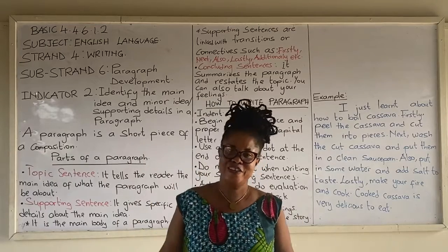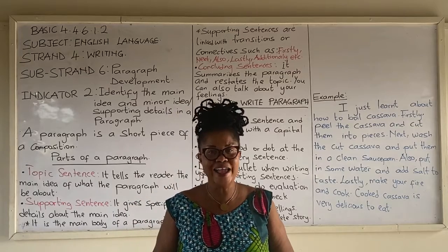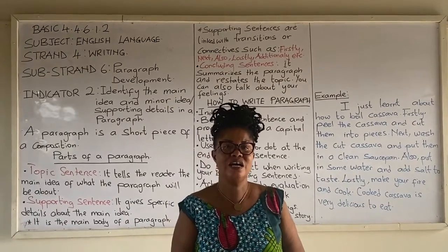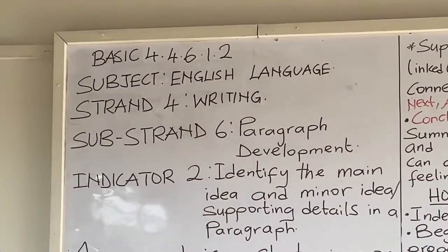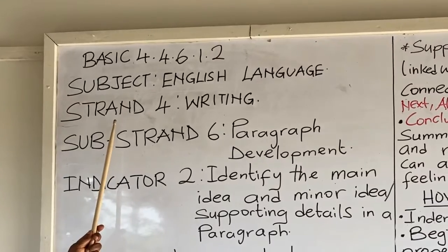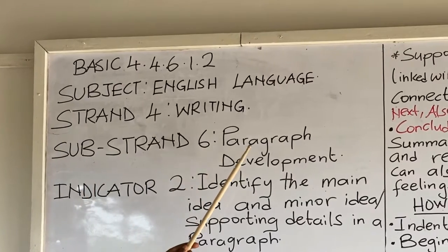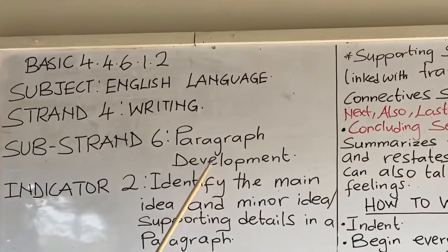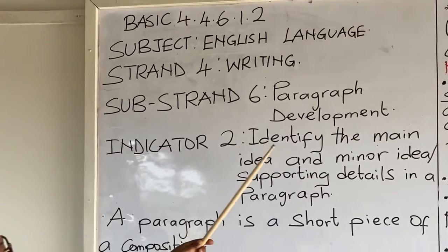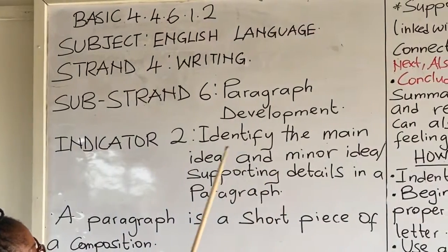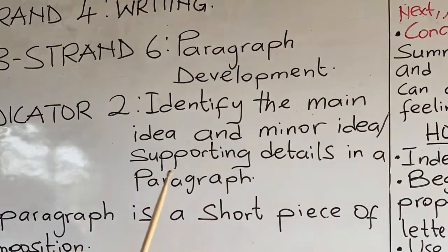Hello, welcome to Little Smalls Basic 4 Online Tutorials. Today's tutorial is on English language, taking from Strand 4, writing, Sub-strand 6, paragraph development. Indicator 2: identify the main idea and minor idea or supporting details in a paragraph.